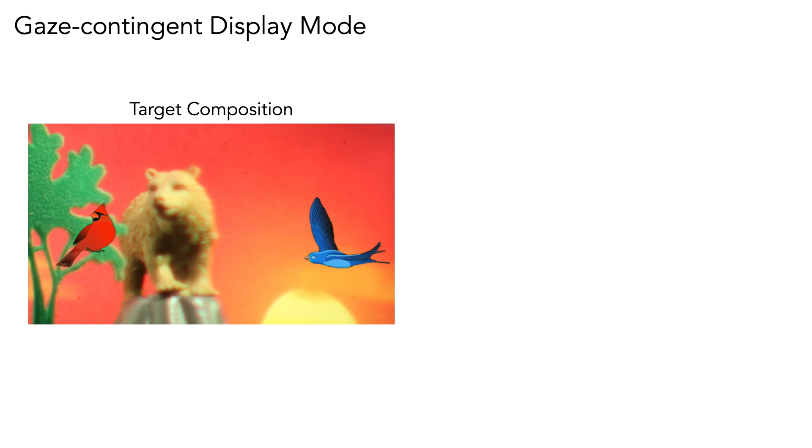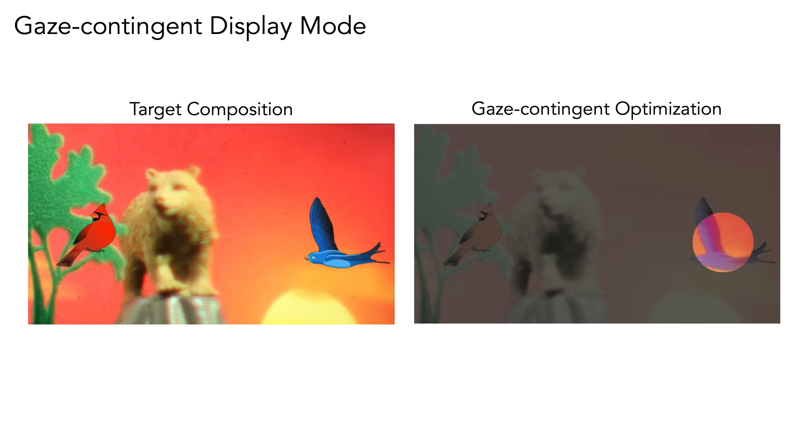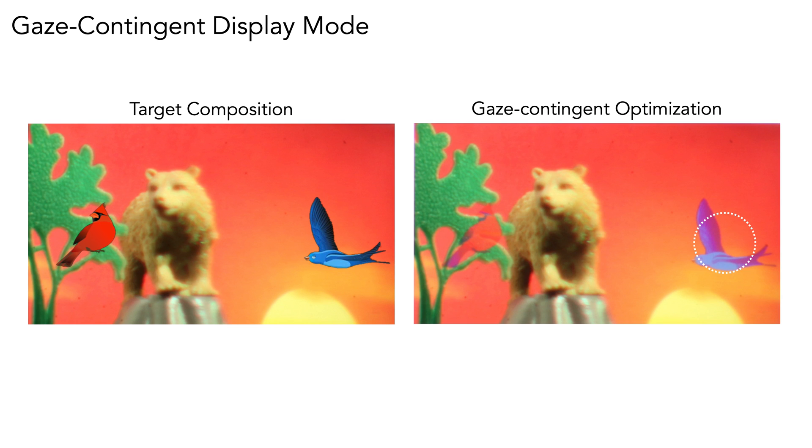So we also demonstrate that we can mitigate these color degradation effects with a gaze contingent display mode. For example, say that we wanted to render the above red and blue birds. Using the global optimization approach previously described, both birds lack full color and detail due to the dynamic range limitations of the approach. But if we had eye tracking and knew that the user was looking closer to the blue bird, we could assign higher weights to those pixels in the factorization algorithm. Which, as demonstrated here, could locally improve correct digital and occlusion rendering of that blue bird.